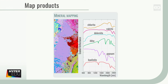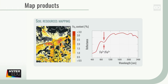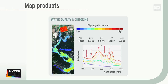And finally, there it is — the map product. Let's have a look at some examples where imaging spectroscopy data came in handy to derive information relevant for different fields of applications, such as mineral mapping, mapping of vegetation characteristics, mapping of soil properties, as well as water quality.